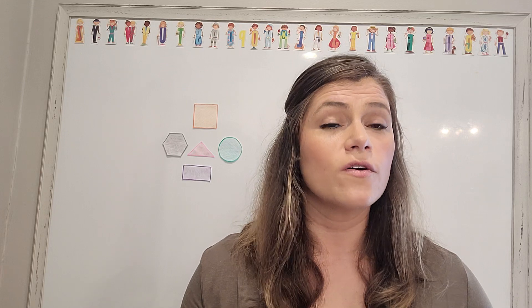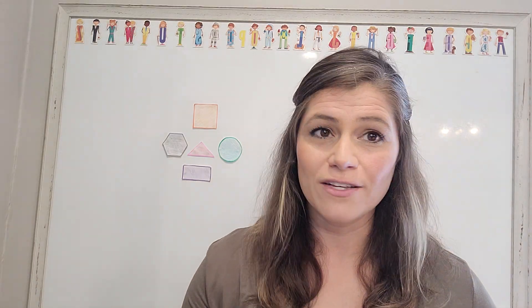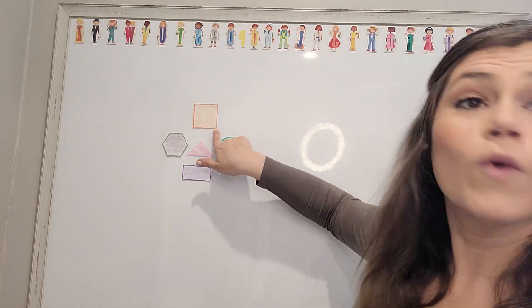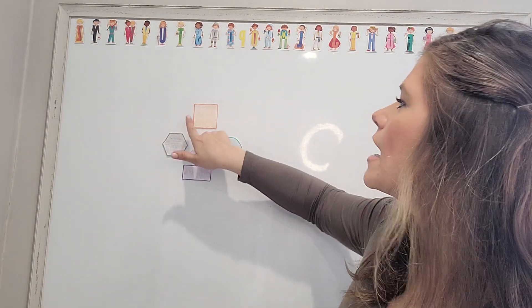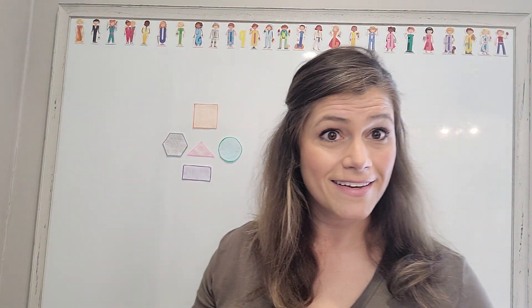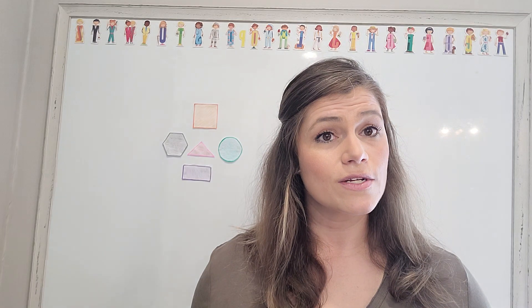Another way we find attributes of the square is we look for the corners. Or, mathematicians like to say, vertices. Vertices are the corners of the angles that the lines make when they come together. So we have one corner or one vertex, two corners or two vertices, three corners or three vertices, four corners or four vertices. So we have four sides that are the same size, and we have four corners that are the same.